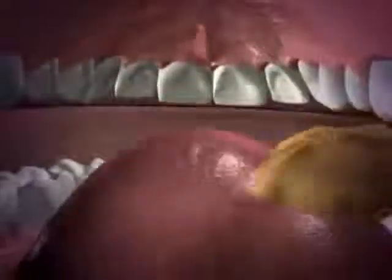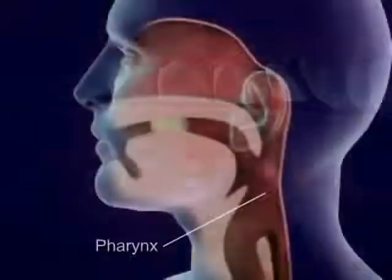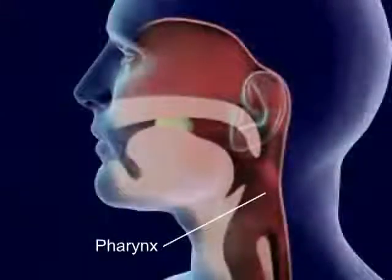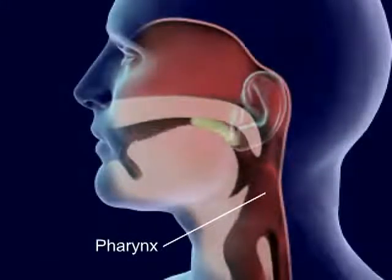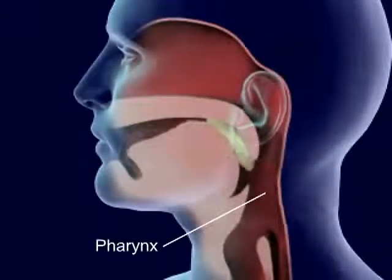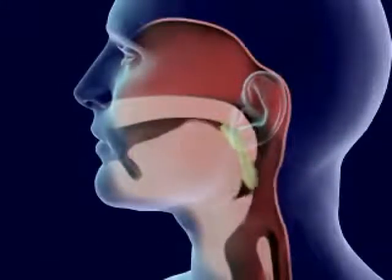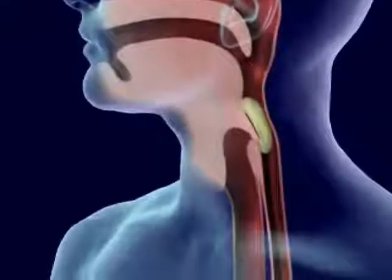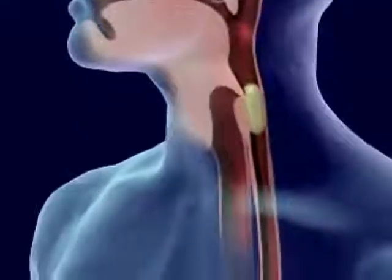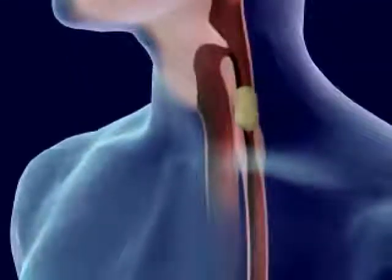Food is forced back into the throat, the pharynx, by the tongue. Food in the pharynx stimulates the swallowing reflex. The larynx is pulled upward to meet the epiglottis and seal off the trachea.